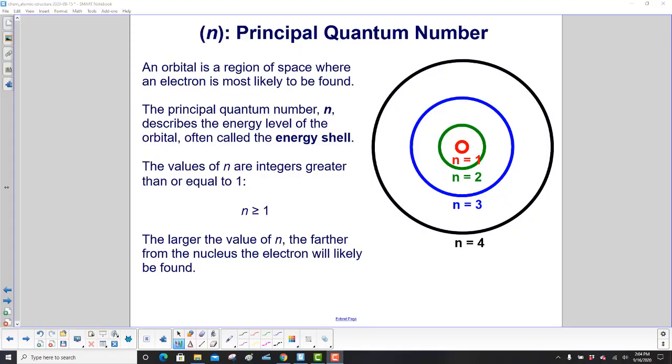An orbital is a region of space where an electron is most likely to be found—not exactly where it's going to be found, but most likely. The principal quantum number, n, which we talked about earlier, describes the energy level of the orbital, often called the energy shell. That's a holdover from Bohr, which is kind of neat.